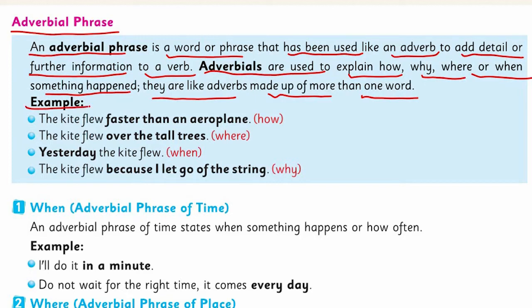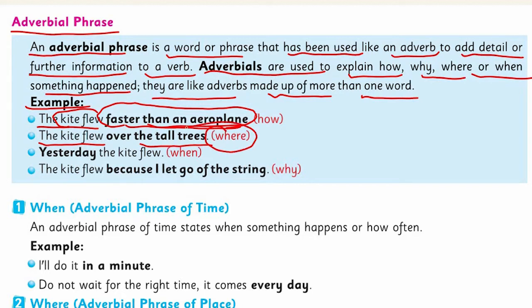Examples: 'The kite flew faster than an aeroplane' — how did the kite fly? Faster than an aeroplane. 'The kite flew over the tall trees' — where did the kite fly? Over the tall trees.